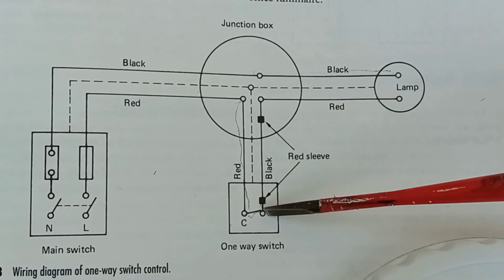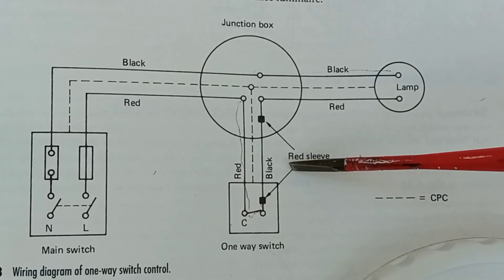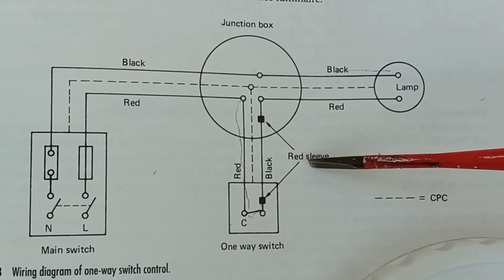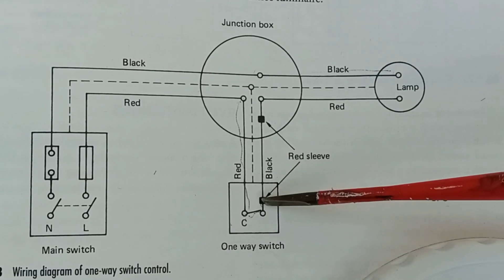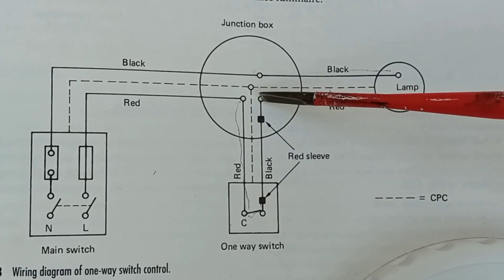And this wire here is representing the blue wire with a brown sleeve from my video. See, they've put a red sleeve in here to identify it as a live switch wire that goes up to the junction box terminal and on to the light fitting here.